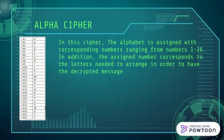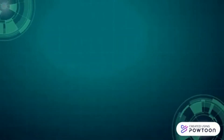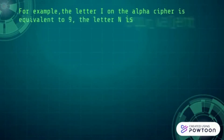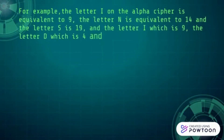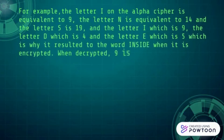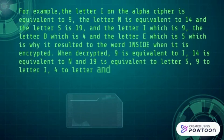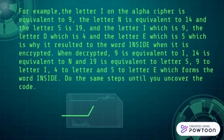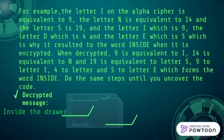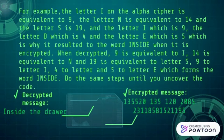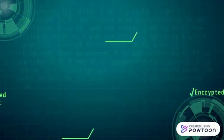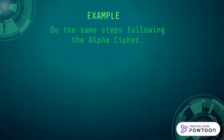One, two, one — A — twenty-three — W — five — E — twenty-four — X... continuing to decode numbers into letters using the alphabet cipher.